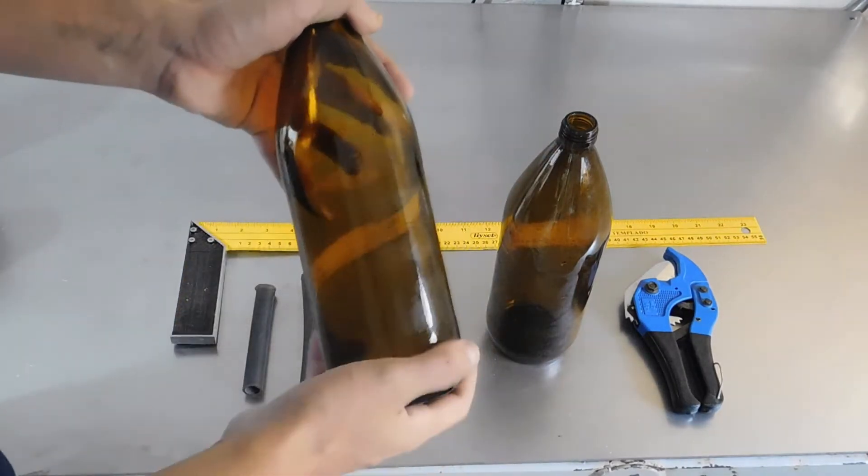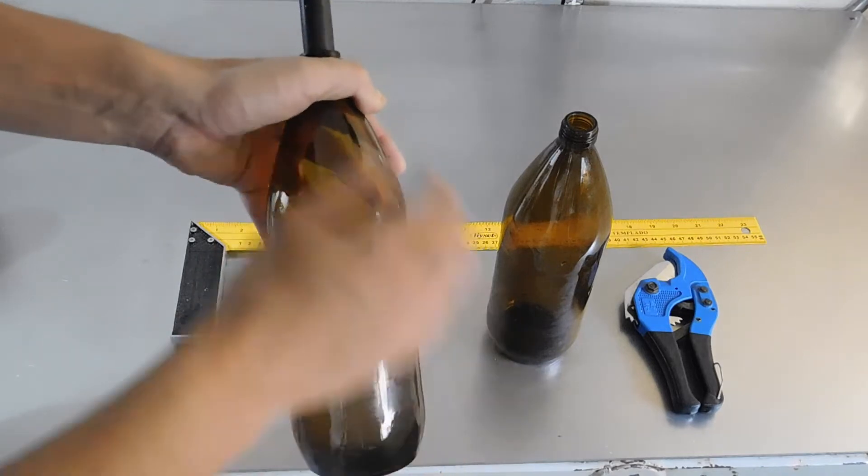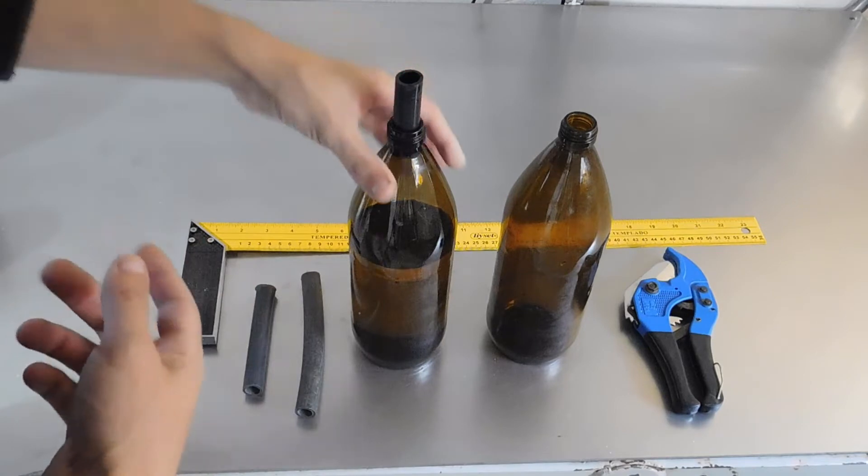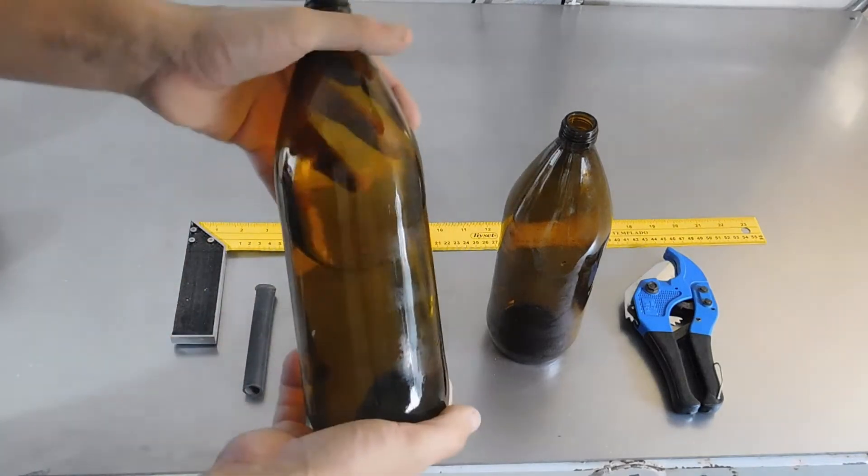En este caso vamos a utilizar envases de vidrio, que es mucho mejor que el plástico. La otra vez les había hablado de unir las tapas para obtener ese vórtice, que también sirve para experimentos.